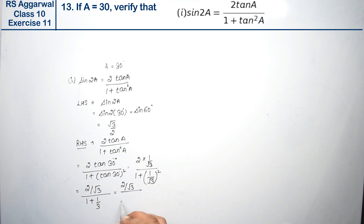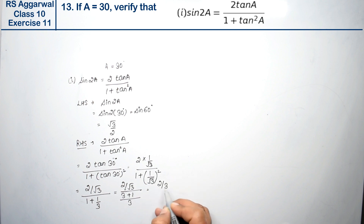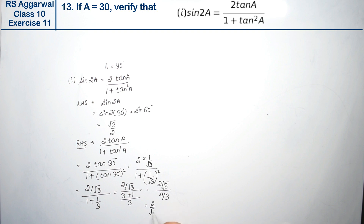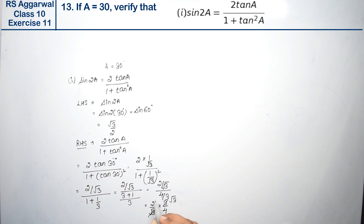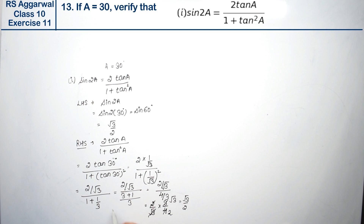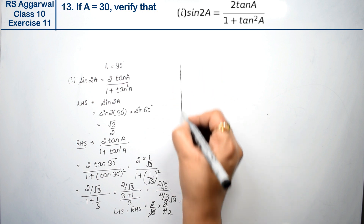Taking LCM in the denominator: 1 + 1/3 = 4/3. So we have (2/√3) divided by (4/3), which equals 2/√3 × 3/4. Simplifying: √3 × √3 = 3, and 2 × 3 = 6, divided by 4 gives √3/2. Hence left hand side equals right hand side. Let's do the second part.